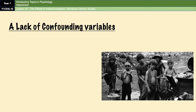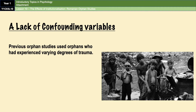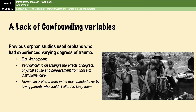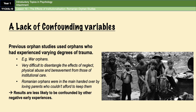Another strength is that Romanian orphan studies have a clear advantage over previously conducted orphan studies: the lack of confounding variables. Many children studied in orphanages before this point had experienced varying degrees of trauma such as neglect, physical abuse, and bereavement due to wars, making it difficult to disentangle those effects from those of institutional care. However, children in Romanian orphanages were largely given up by loving parents who simply couldn't afford to keep them, meaning the results are less likely to be confounded by other negative experiences and are therefore more likely to have high internal validity.